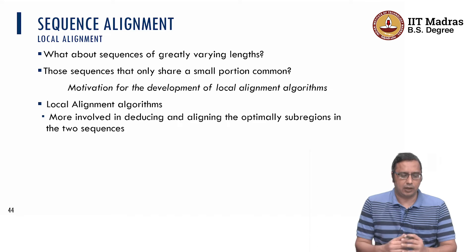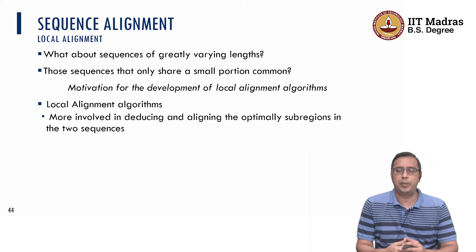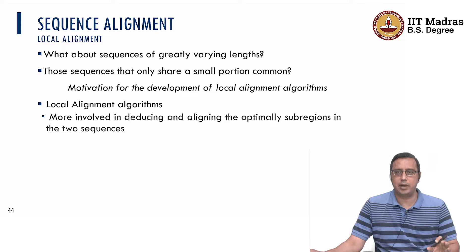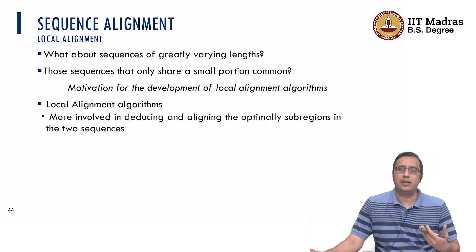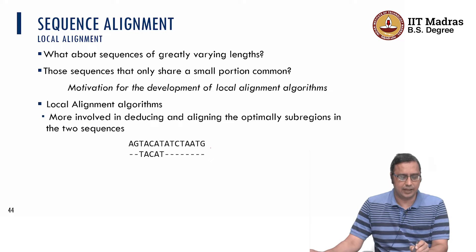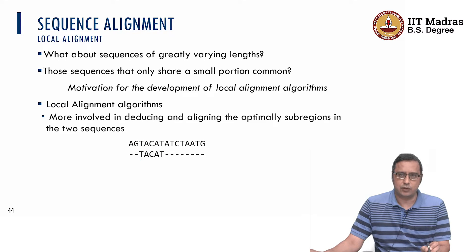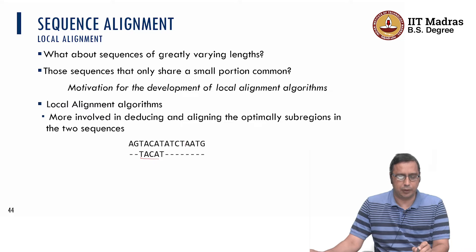Local alignment algorithms are typically used to deduce and align the optimal sub-regions in two sequences. We are not looking for a complete global alignment; we are looking at sub-regions in the sequences of the same similar size, similar length, or greatly varying lengths. For example, one sequence might be quite large and another quite short, and we want to find the best alignment for the short sequence within the large sequence.